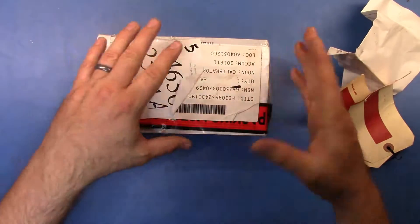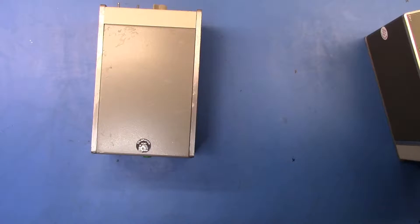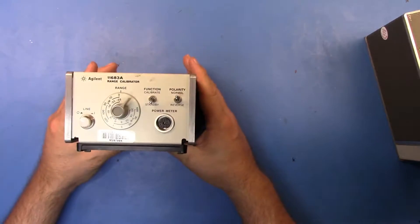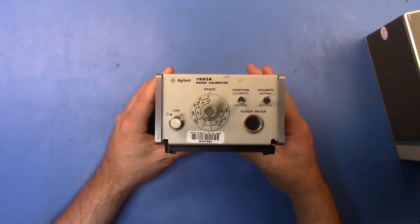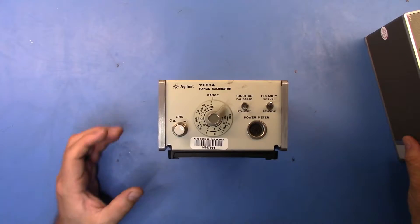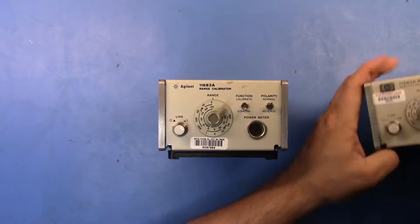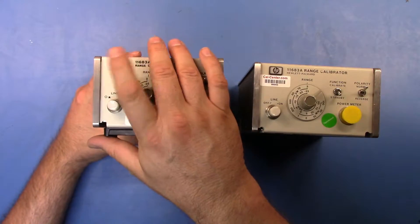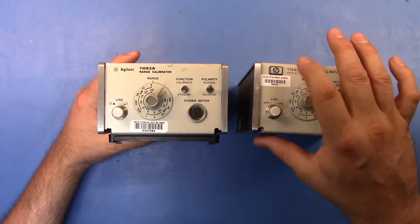Let me take this top piece off here and then we'll take a look at the back. Here we go, we have the range calibrator. You can see that it's a lot newer model than the one here because this one is branded Agilent.